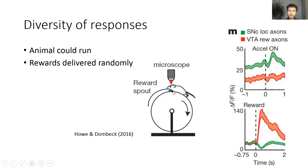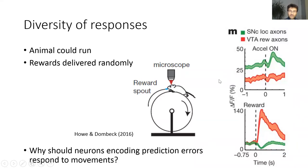In their experiment, a mouse was head-fixed above a wheel on which it could freely run, and a pipe with reward was placed in front of the mouse. Critically, rewards were delivered randomly, irrespective of animal movements, so the authors could compare the dependence of dopaminergic neuron activity independently on reward and movements. Neurons in VTA responded to reward as expected from standard reinforcement learning theory. By contrast, dopaminergic neurons in SNC did not respond to reward but responded to movements. This raises the question: why should neurons encoding prediction errors respond to movements?